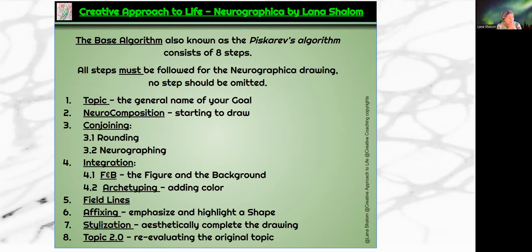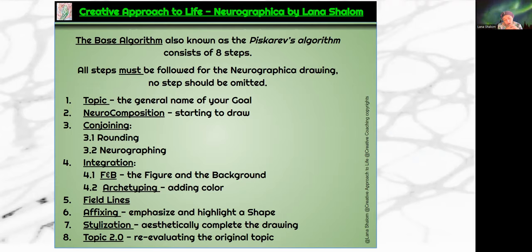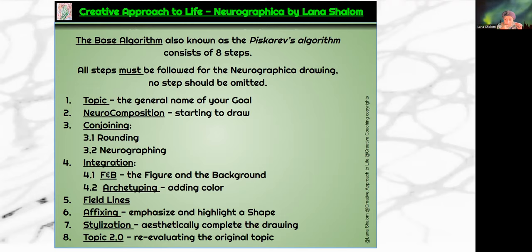The first step is always setting the topic — sometimes called Topic 1.0, because the last step will be Topic 2.0. This is about setting your goal. Sometimes it's important to focus on the general area of your goal: health, money, personal success, relationships, and so on. Set the topic, find the theme, find the general area where you would like to achieve results.